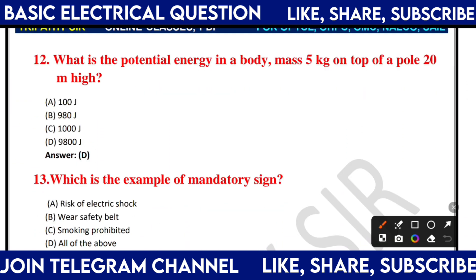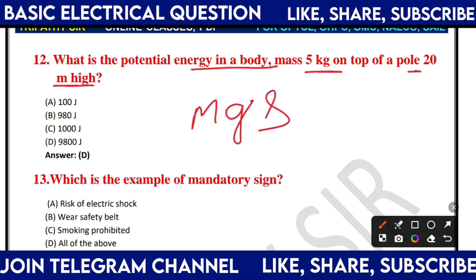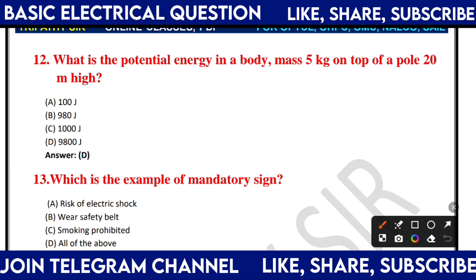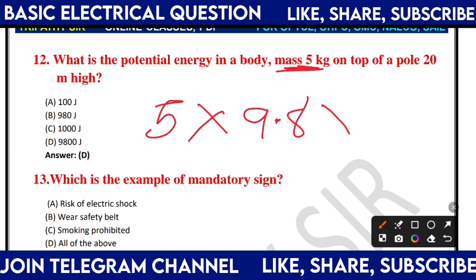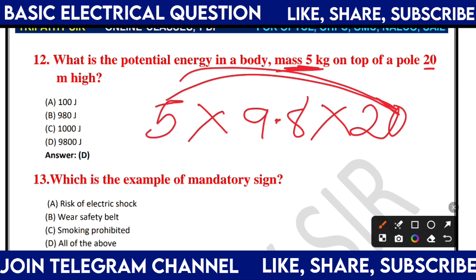What is the potential energy of a body of mass 5 kg at the top of a pole of 20 metres height? This is an important question. Formula: PE = mgh. Mass = 5 kg, g = 9.8, height = 20. So 5 × 9.8 × 20 = 980 Joules — Option D.